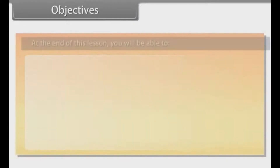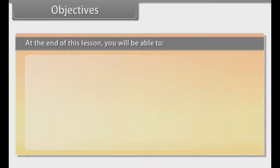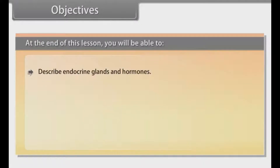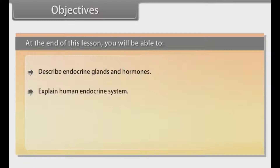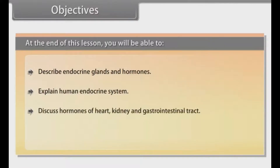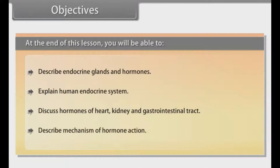At the end of this lesson you will be able to: describe endocrine glands and hormones, explain the human endocrine system, discuss hormones of the heart, kidney and gastrointestinal tract, and describe the mechanism of hormone action.